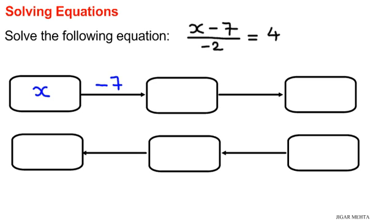Which gives us x minus 7, and then x minus 7 is divided by negative 2, that gives us x minus 7 divided by negative 2.